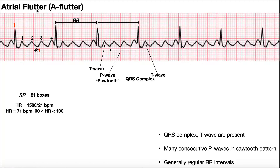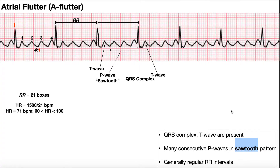Let's get into atrial flutter, which is sometimes just called aflutter. Here's the thing about aflutter: it's going to have these characteristic sawtooth waves, which are also sometimes called delta waves. If you look and find QRS complexes, those are easy to find. If you notice between them, you've got this sawtooth pattern between the QRSs. It actually appears pretty regularly — between them there's actually four of them.